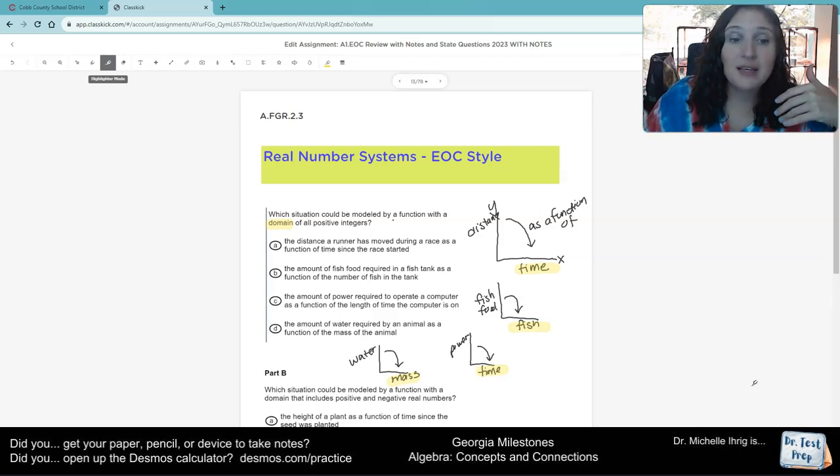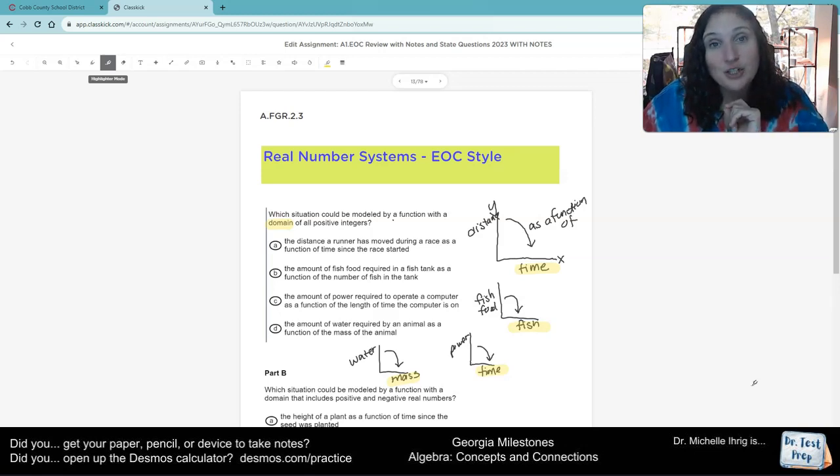So because of that, the answer will be letter B. Because the domain can only be positive integers. We can only have whole fish in our tank. You also can't have negative six fish. That would be regular integers. So it has to be whole positive integers.